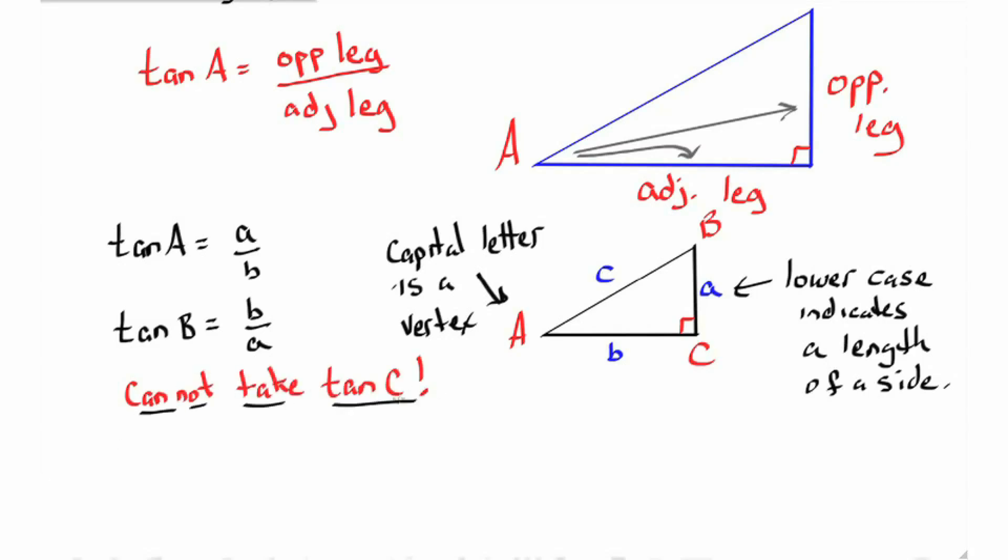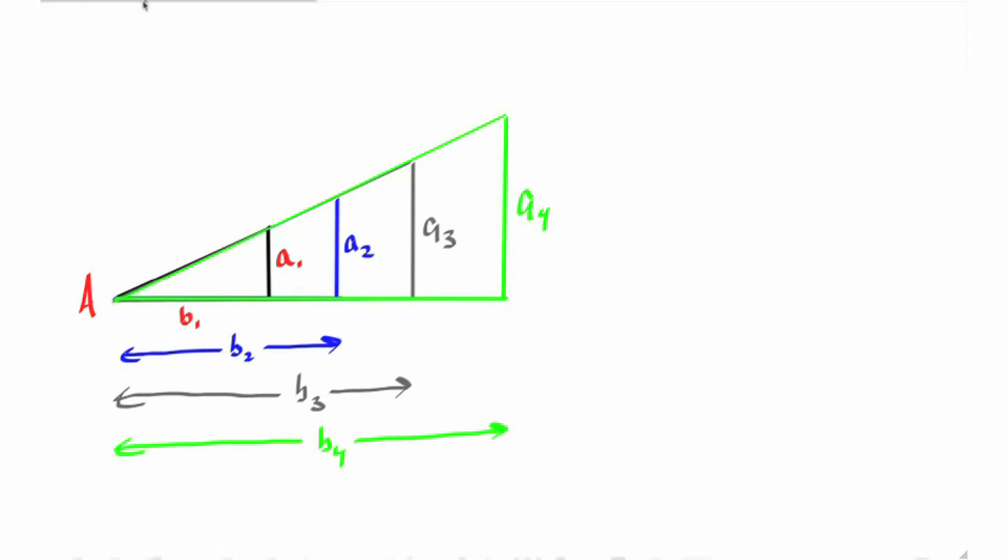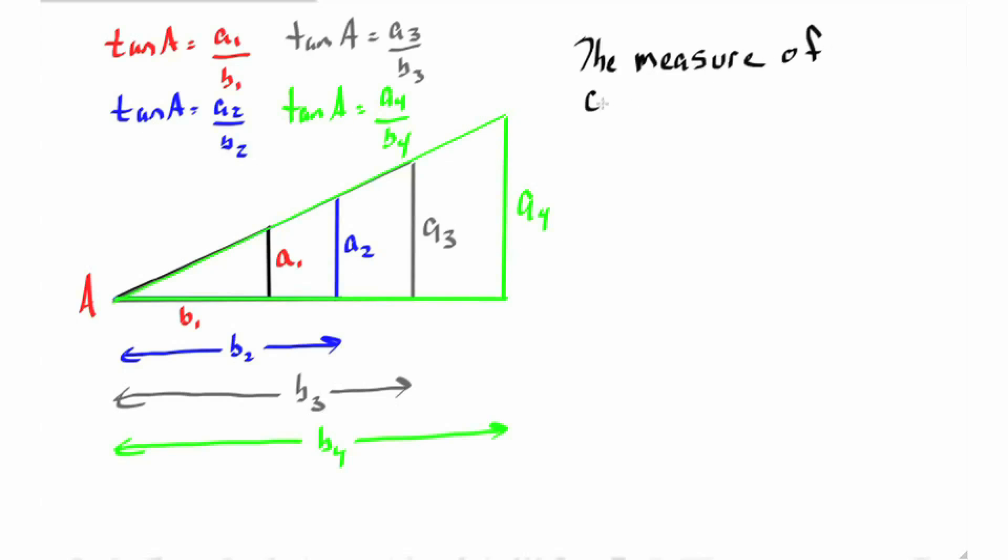So the tangent function is useful for relating angles and the corresponding sides of right triangles. Here I'm creating different similar triangles, but the tangent of angle A is always going to be equal to the corresponding opposite leg divided by the corresponding adjacent leg.